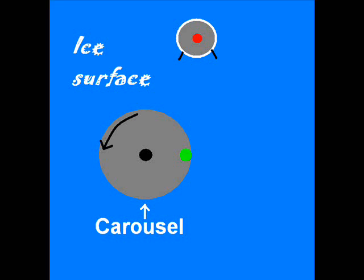Here's a little thought experiment. We will only be concerned with motion in the plane of rotation. Imagine a carousel mounted in the middle of an ice rink. You spin up the carousel and stand on the edge where the green dot is. What happens when you step off the carousel at this point? The answer is, you will travel on a straight line towards the target. This is because your momentum at any given instant is in a tangent to the circle of your rotation. Anyone who has ever spun a ball on a string before letting it go can attest that this is the case.